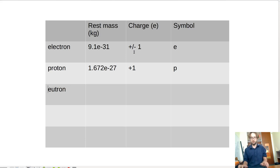Neutrons have a rest mass of 1.674 E to the negative 27. So they weigh just a little more than their proton counterparts, and have zero charge. They're neutral. They're electrically neutral. And these we denote with the symbol N.